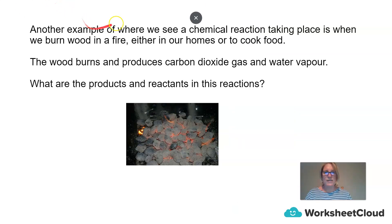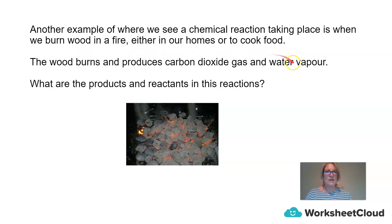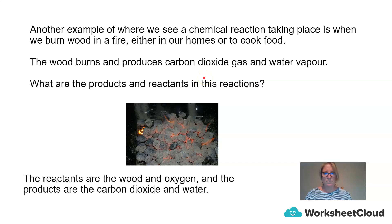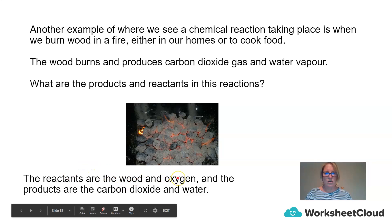Another example of where we see a chemical reaction taking place is when we burn wood in a fire, and we use that in our homes or to cook food. The wood burns and produces carbon dioxide gas and water vapour. The reactants are the wood and the oxygen, and the products are the carbon dioxide and the water.